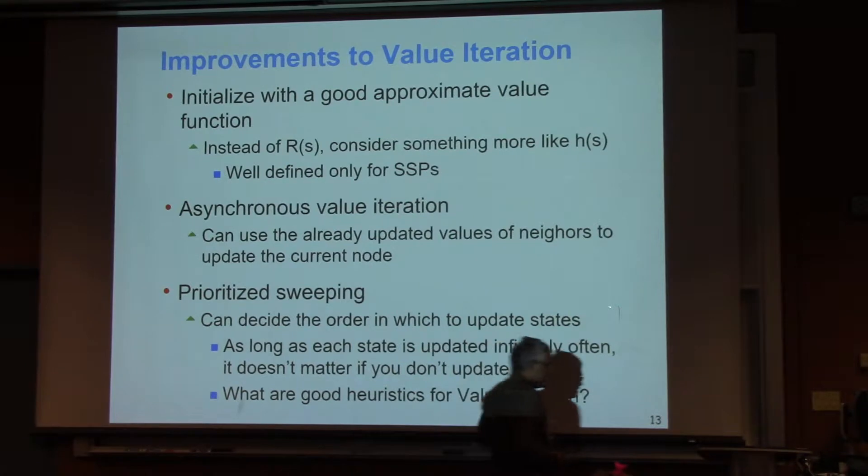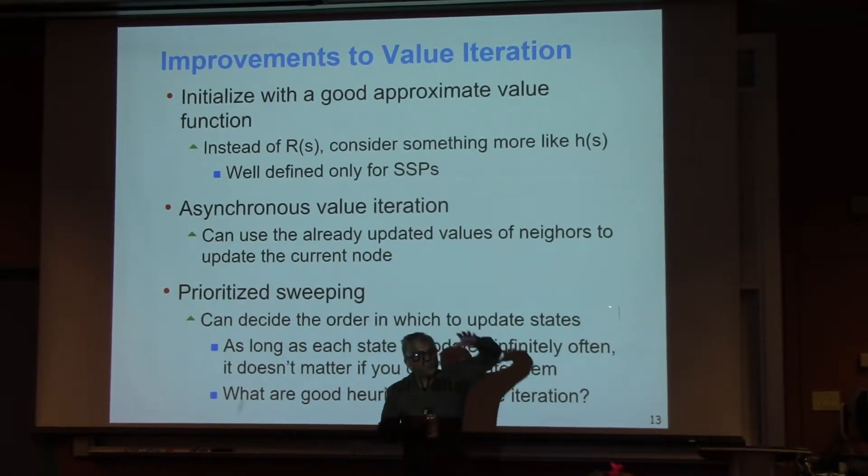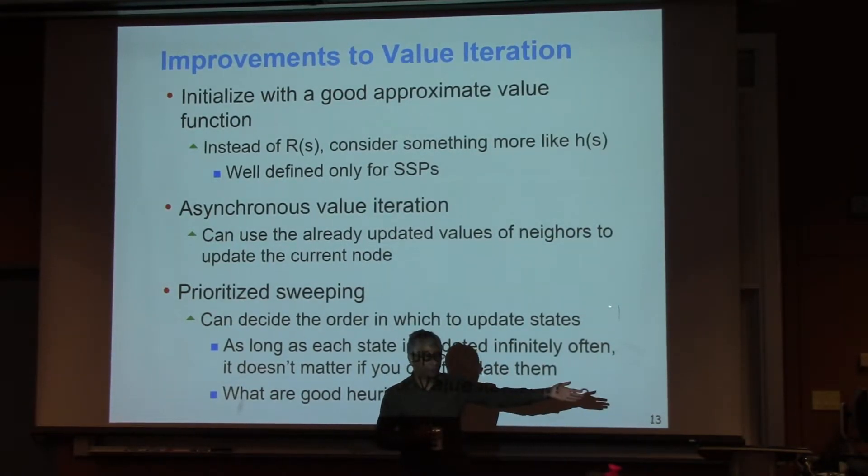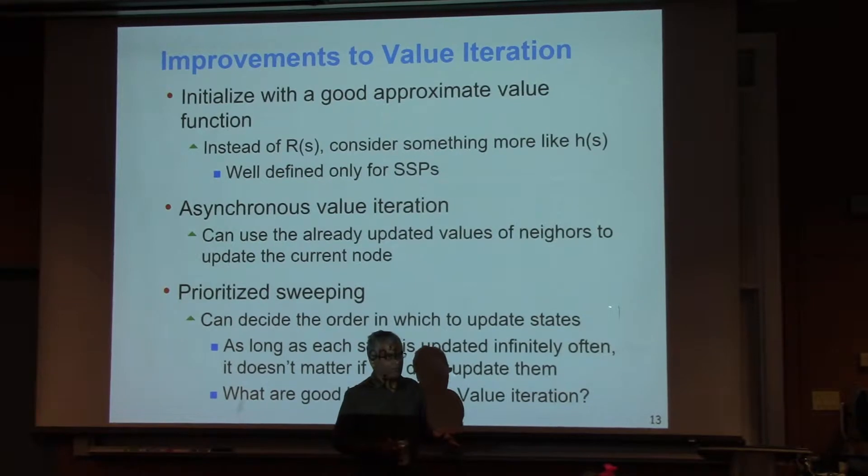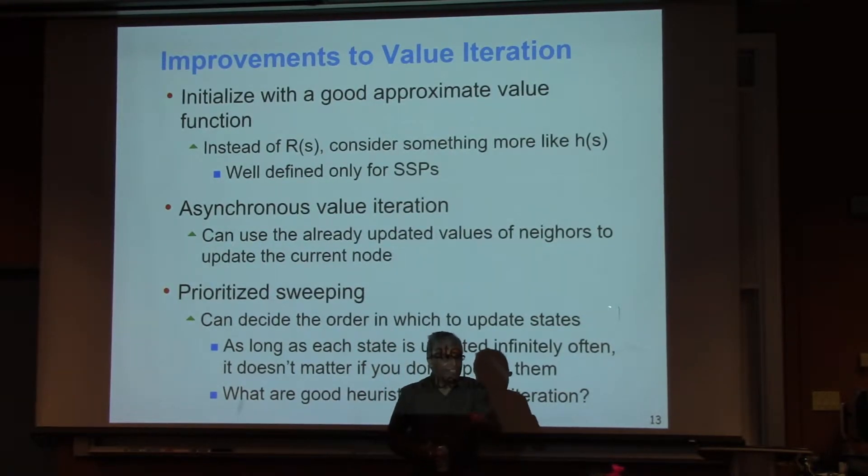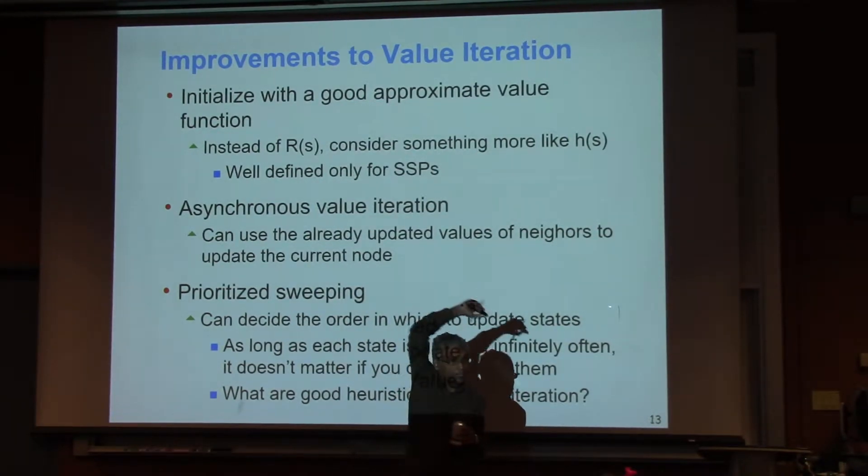The other very interesting thing is in the normal value update, we basically assumed that everybody uses the values of their neighbors from the previous iteration. But if you're no longer doing synchronous update, then there is no such thing as iteration. So somebody might have changed this state might have changed its value 15 times from the start, whereas its neighbors may only have changed their values like 7 times, 9 times, and 20 times. It turns out actually it's better.